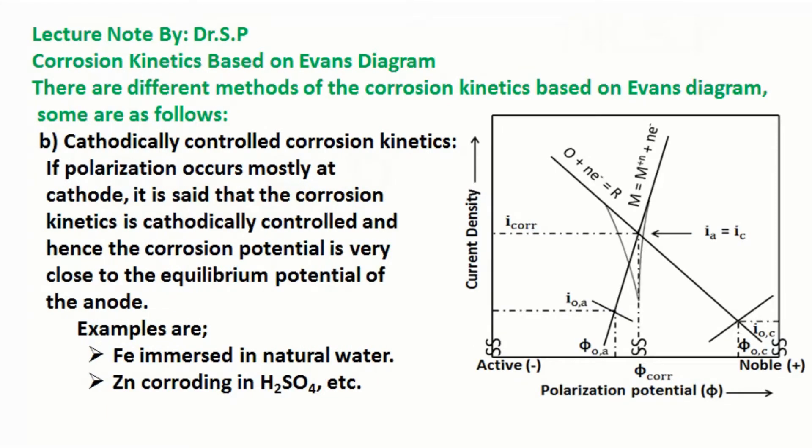Cathodically controlled corrosion kinetics: If polarization occurs mostly at cathode, it is said that the corrosion kinetics is cathodically controlled and hence the corrosion potential is very close to the equilibrium potential of the anode.